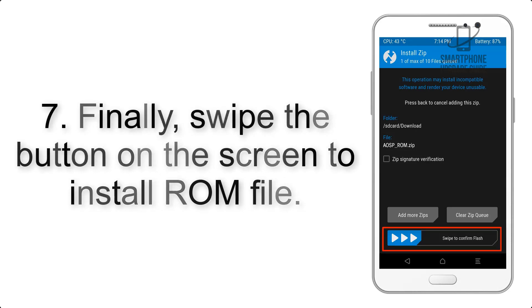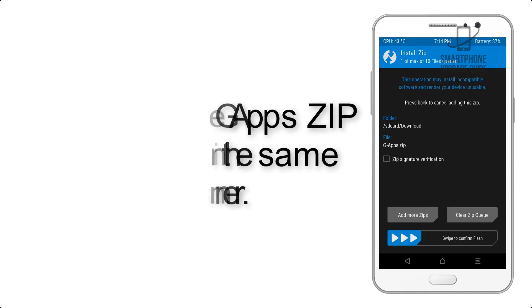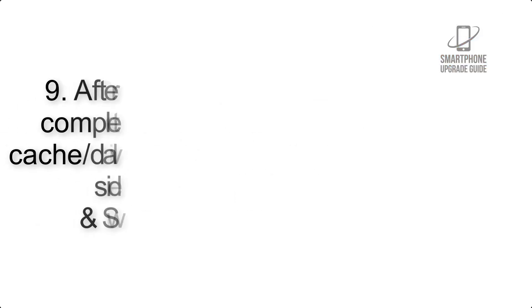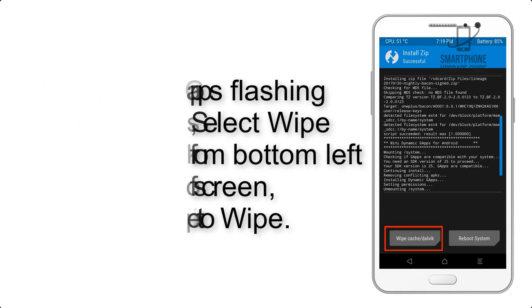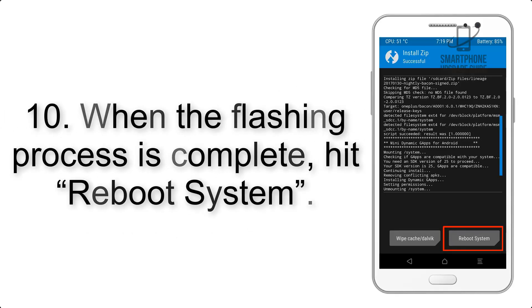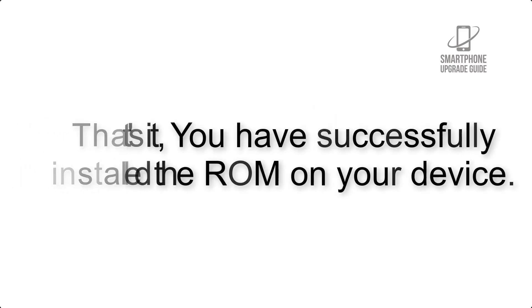Step 7: Swipe the button on the screen to install the ROM file. Step 8: Flash the GApps zip package in the same manner. Step 9: After GApps flashing completes, select Wipe Cache and Dalvik from the bottom left side of the screen and swipe to wipe. Step 10: When the flashing process is complete, hit Reboot System. That's it — you have successfully installed the ROM on your device.